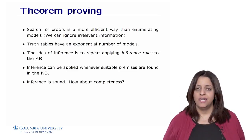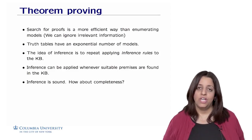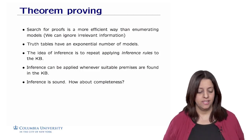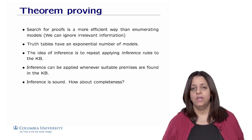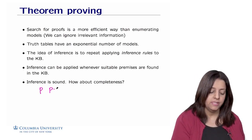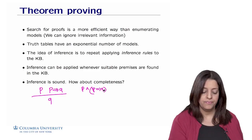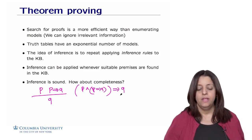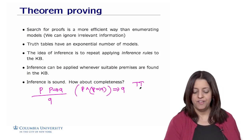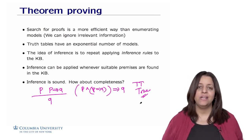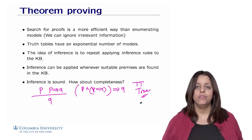An important question is whether inference is sound and complete. For soundness, it's enough to check that inference is sound at each step. For example, modus ponens — p and p implies q infers q — can be expressed as the proposition (p and p implies q) implies q. If you do the truth table of this proposition, you'll find that it is a tautology — true no matter what p and q are. So we have a sound inference rule.